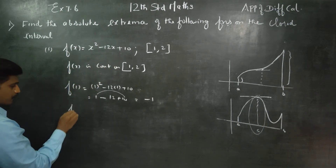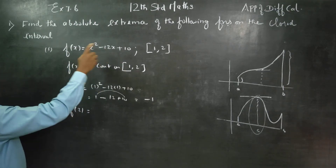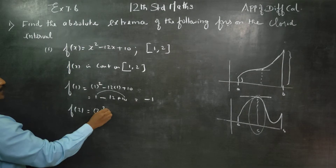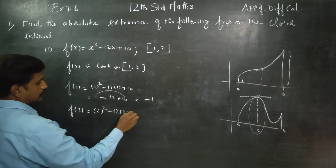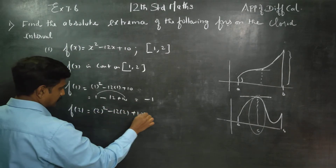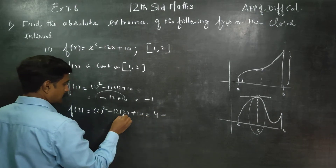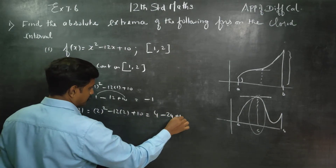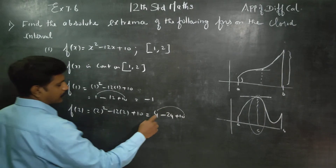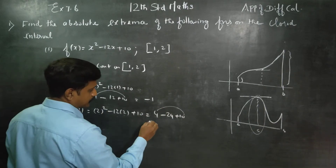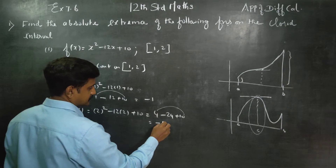Next, go to f of 2. Substitute f(2): 2 squared minus 12 into 2 plus 10. 2 squared is 4, minus 24, plus 10. 4 minus 24 is minus 20, plus 10 gives minus 10. Your answer will be minus 10.